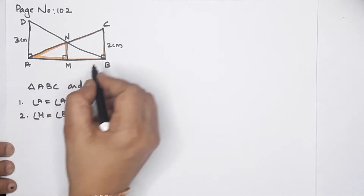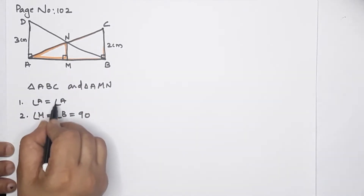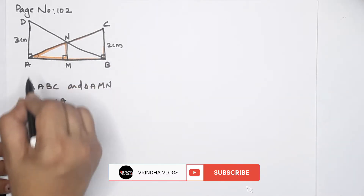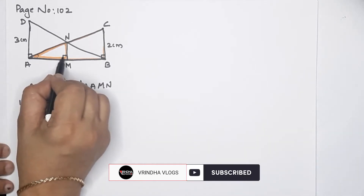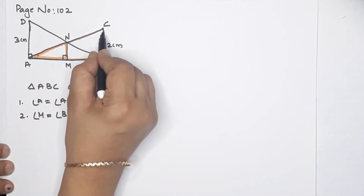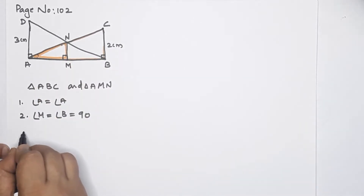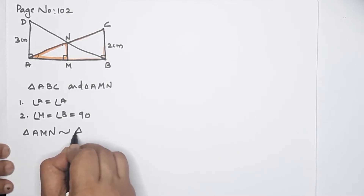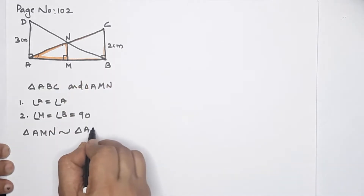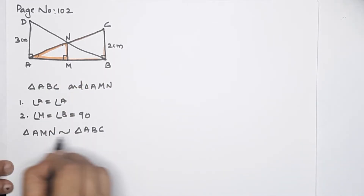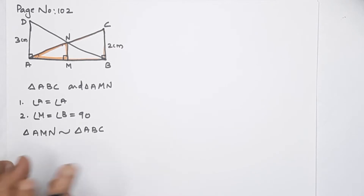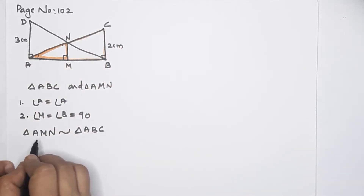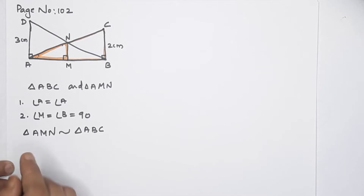Now we have two angles that are the same. The three angles are the same. Triangle A, M, N is similar to triangle A, B, C — M corresponding to B. These are similar triangles. Since two triangles are similar, their sides are proportional.